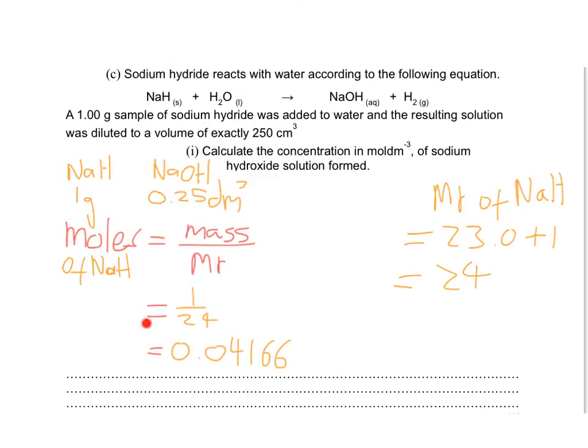The reason we want to work out moles is because once we have the moles of one thing, we can use molar ratios to work out the moles of anything else in the equation. We've got 0.04166 moles of sodium hydride, and that's reacting with water to form sodium hydroxide and hydrogen gas. What's the ratio between sodium hydride and sodium hydroxide? It's a one-to-one ratio. That means if 0.04166 of this reacts, we get 0.04166 of the sodium hydroxide. So we now have the moles of sodium hydroxide.